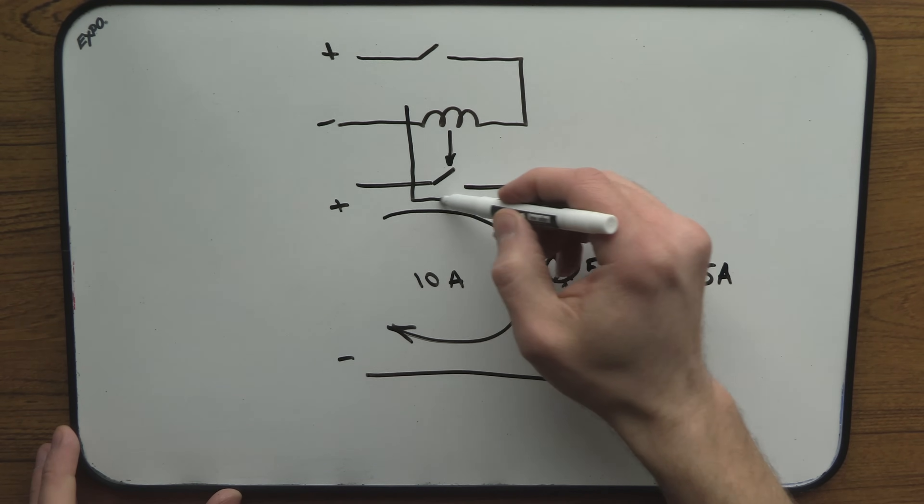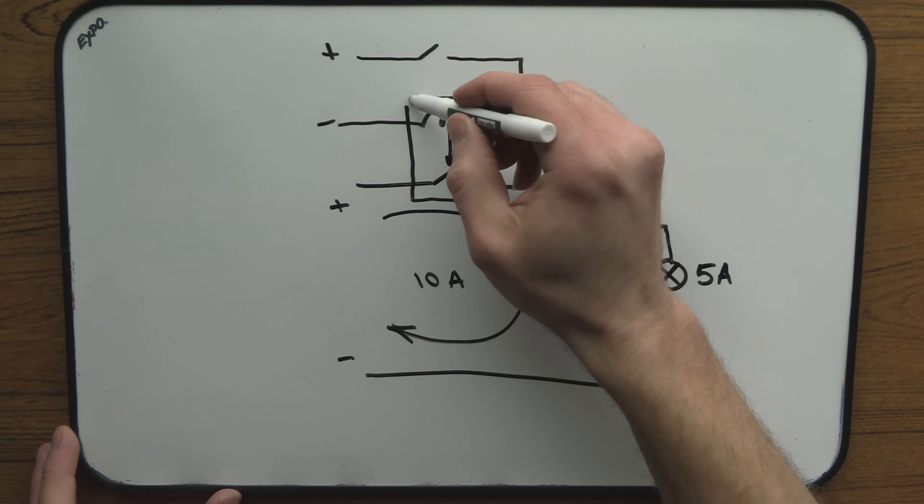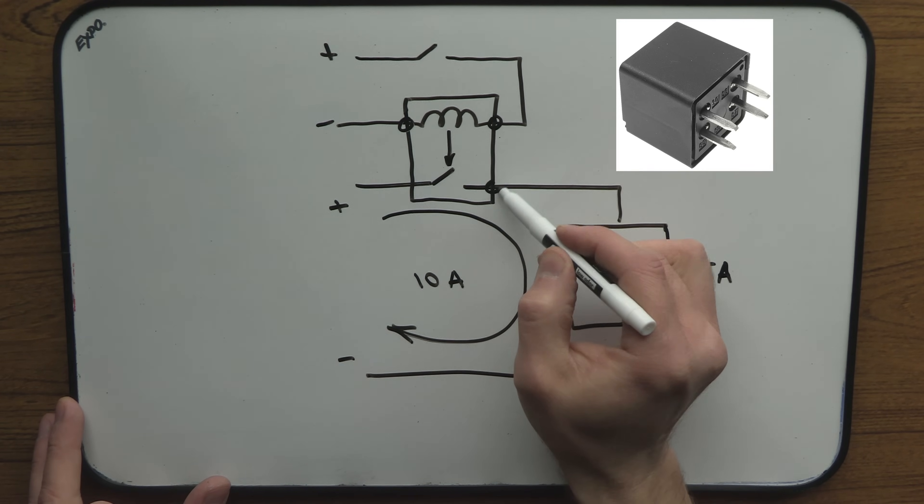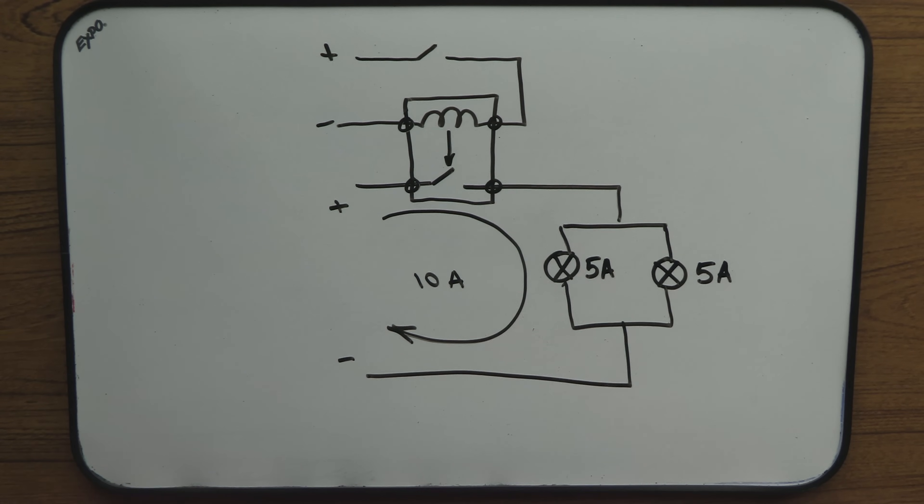And this right here forms a relay with four points of contact. Two for the coil and two for the switch. On the coil side, we have control circuit and on the switch side, we have load circuit.